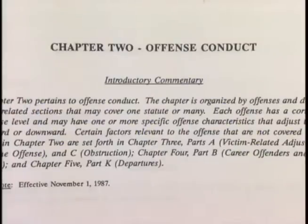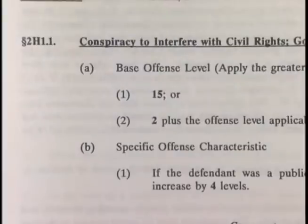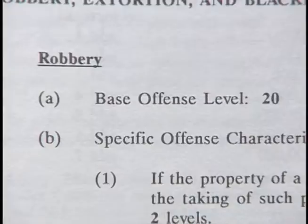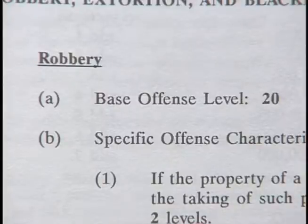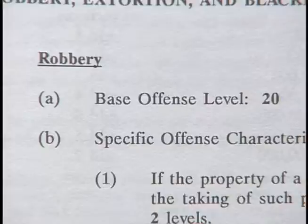Let's explore the Sentencing Commission's guidelines in more detail. We'll begin by examining how categories of offenses are established under the guidelines. Chapter 2 of the manual contains guidelines assigning numerical levels to specific offenses, such as drug trafficking, conspiracy to interfere with civil rights, or robbery. These numerical levels are called base offense levels. The Commission has assigned a base offense level to each offense in Chapter 2. As we've seen, the base offense level for robbery is 20.